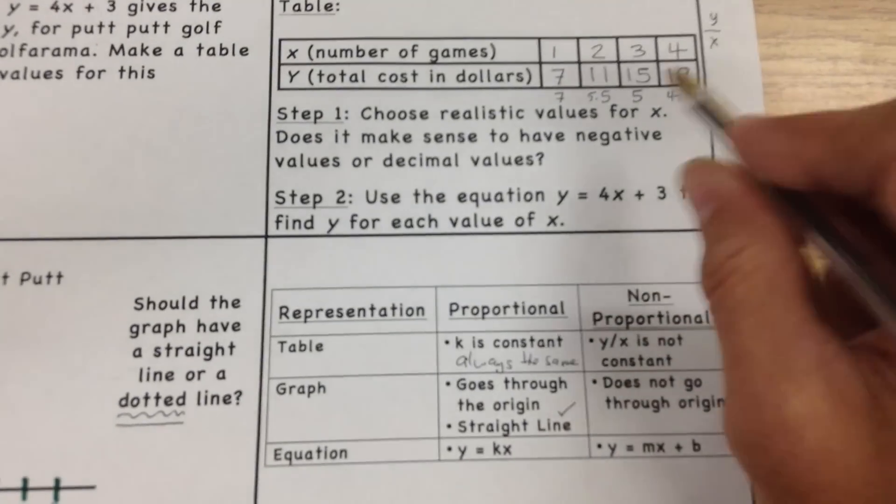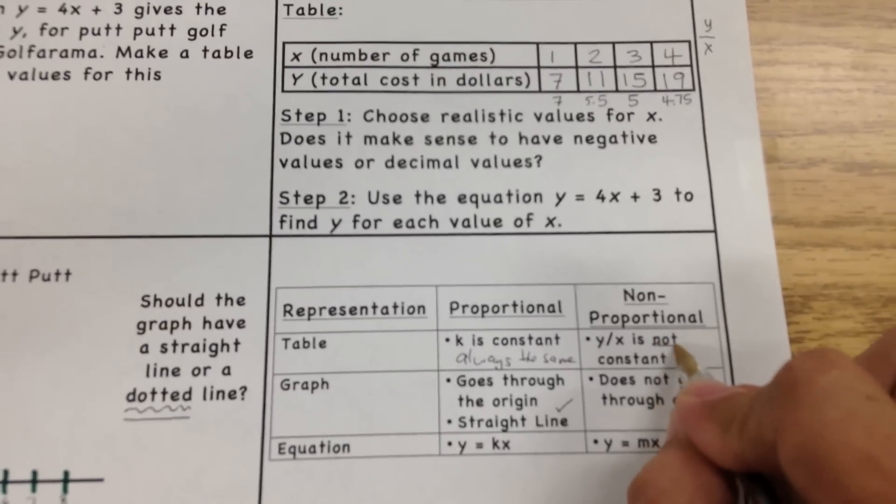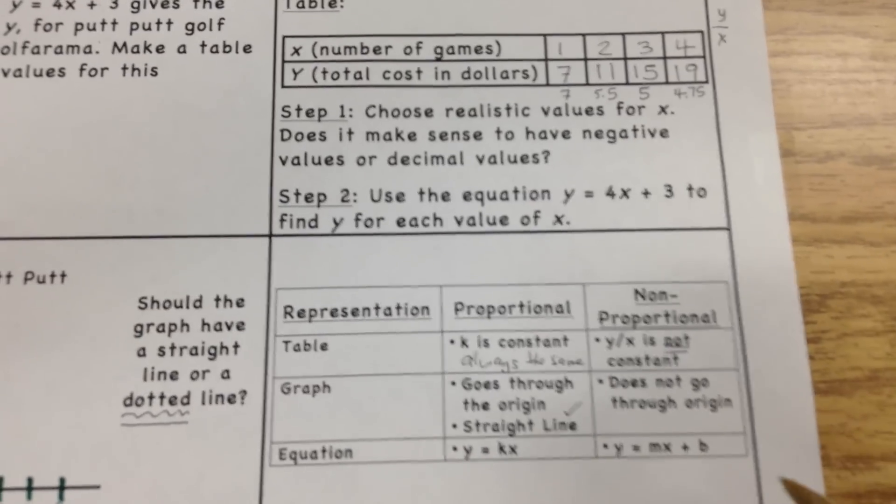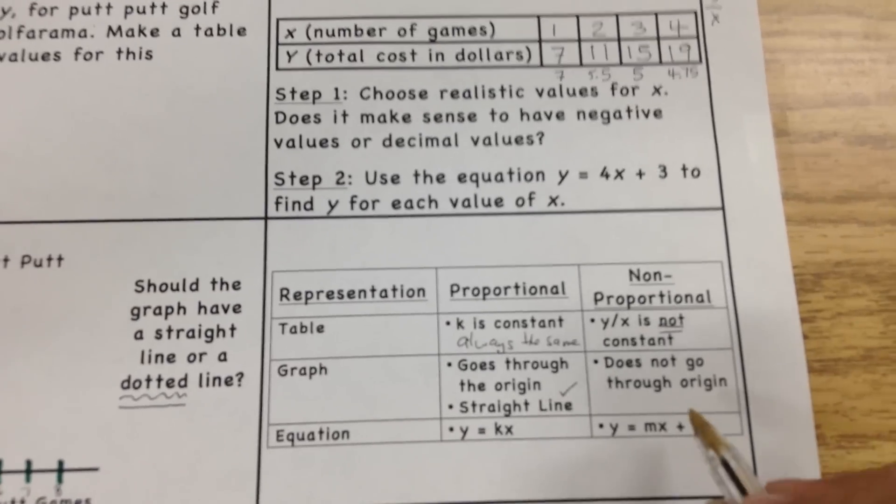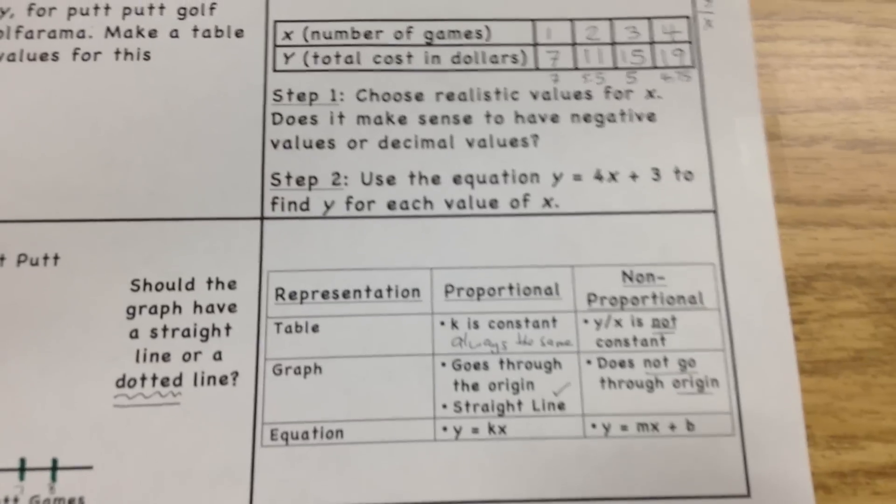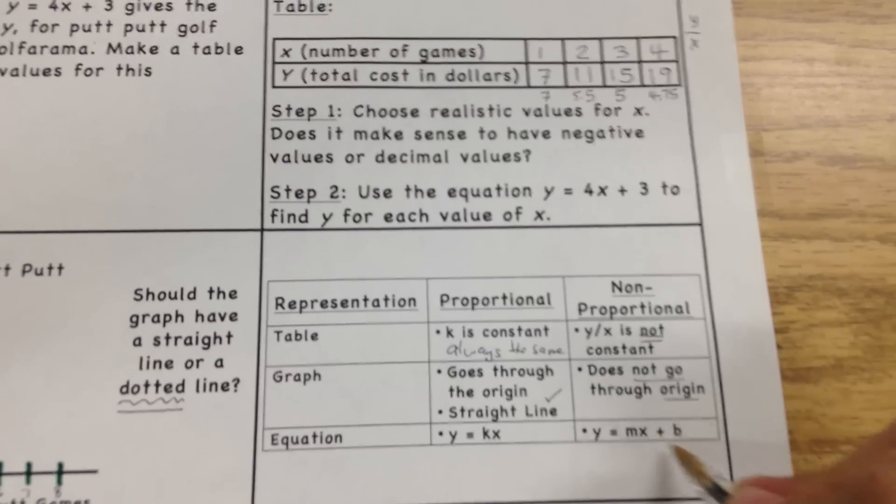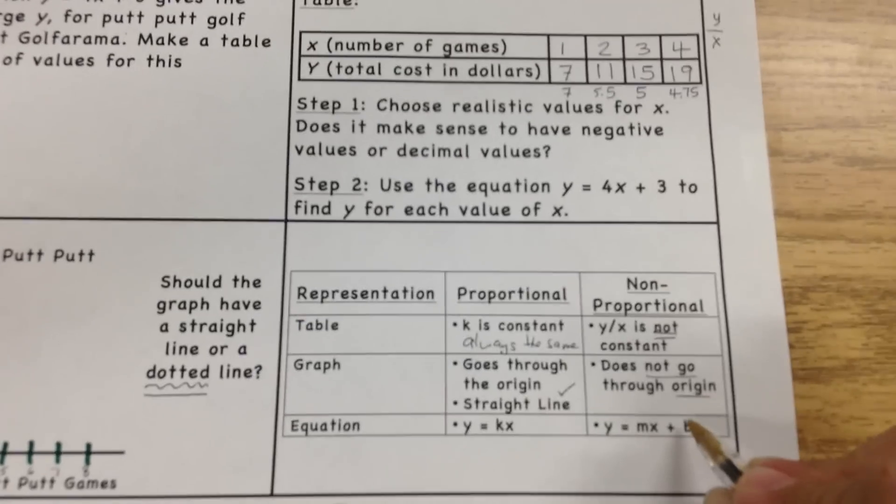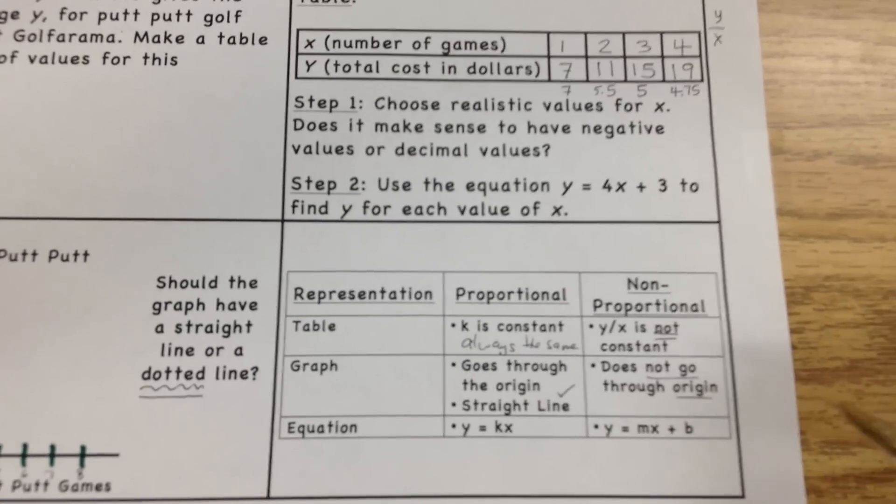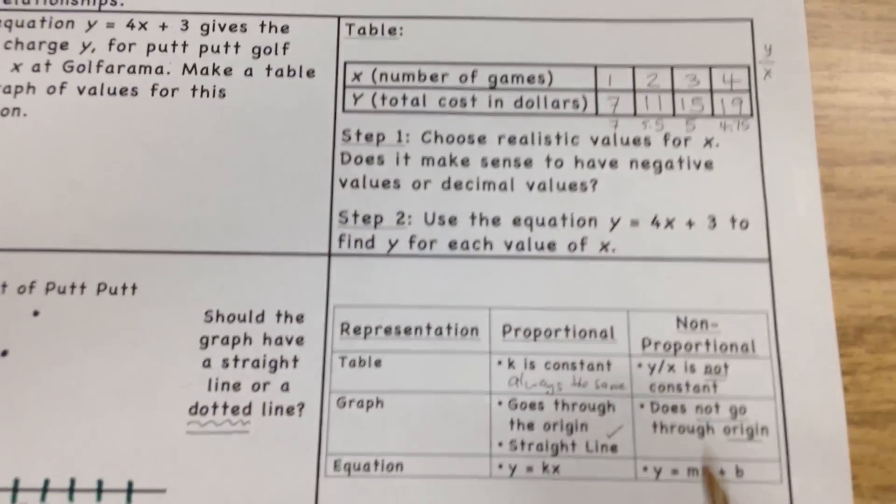But again, what we found up here when we did y divided by x, we got a different answer. It was not constant. That makes it non-proportional. It did not go through the origin. And what we're going to start talking about, and this is going to be very important, when we start doing this plus something, in this case it's plus B, in this one we just did, the three is the B.